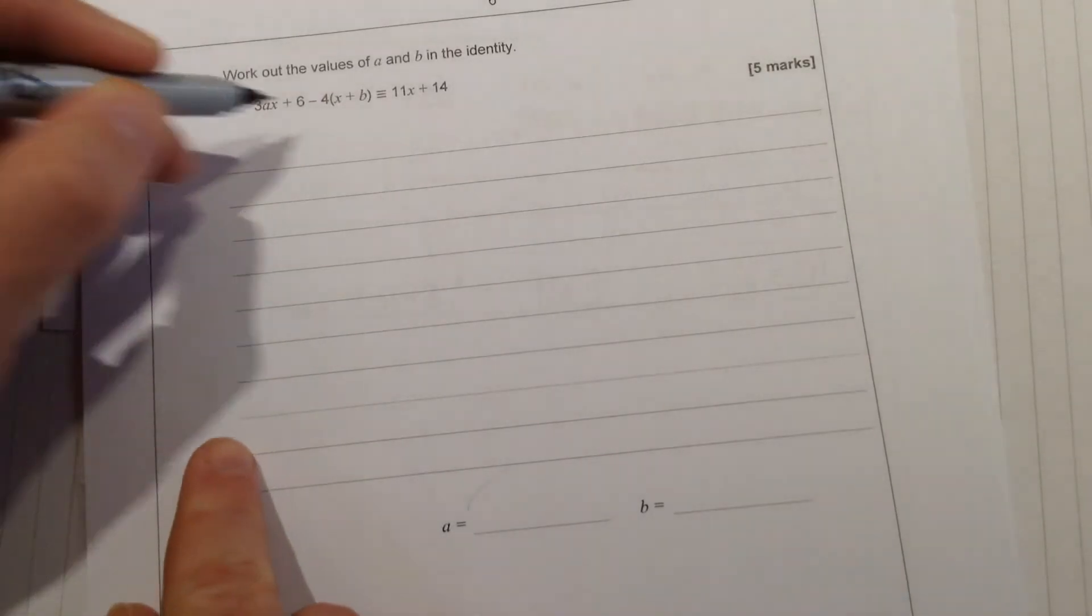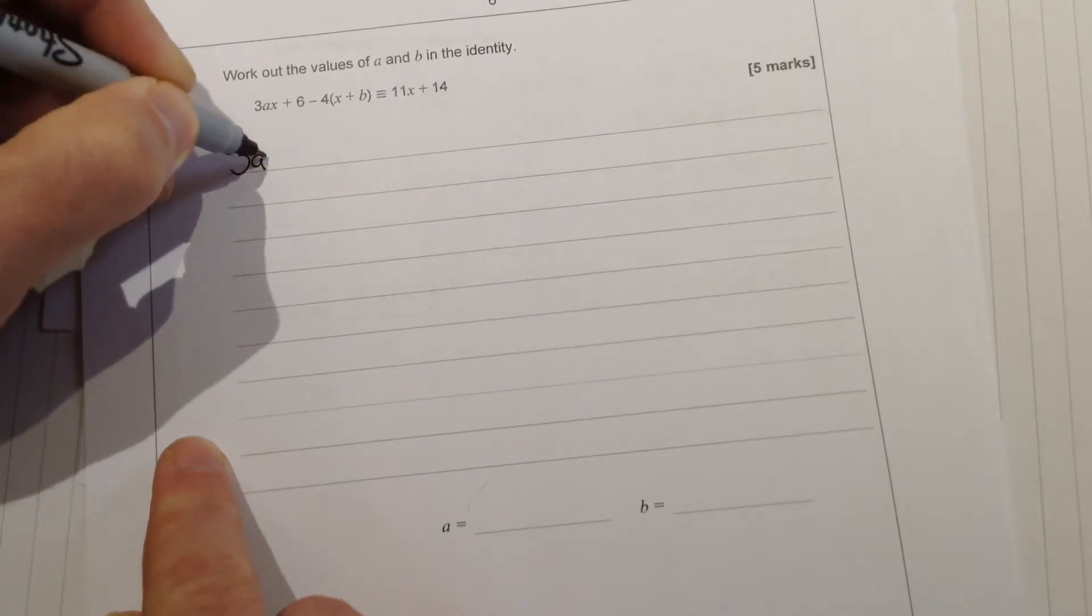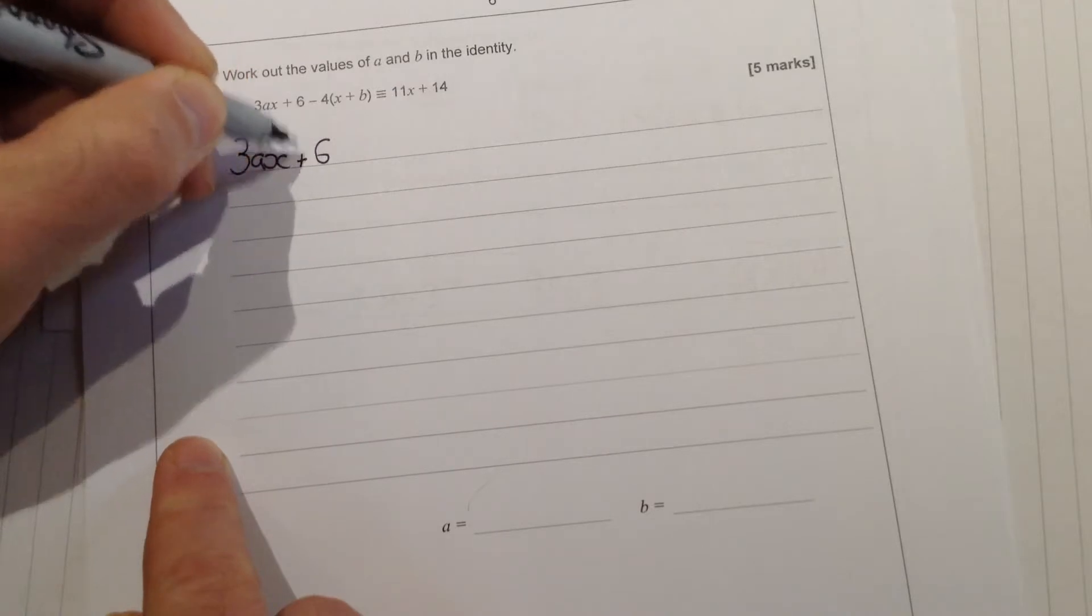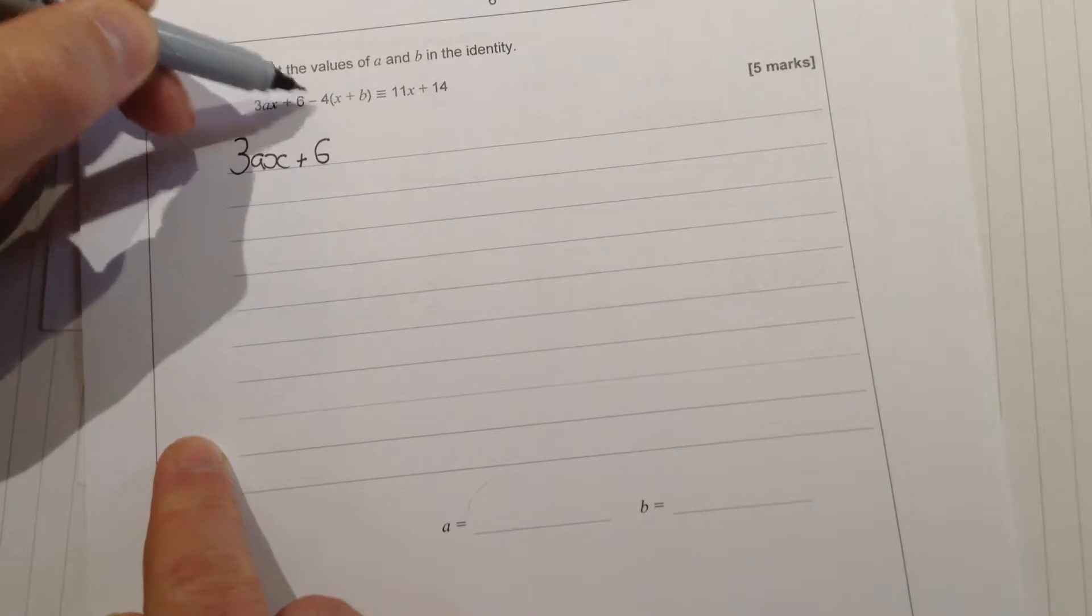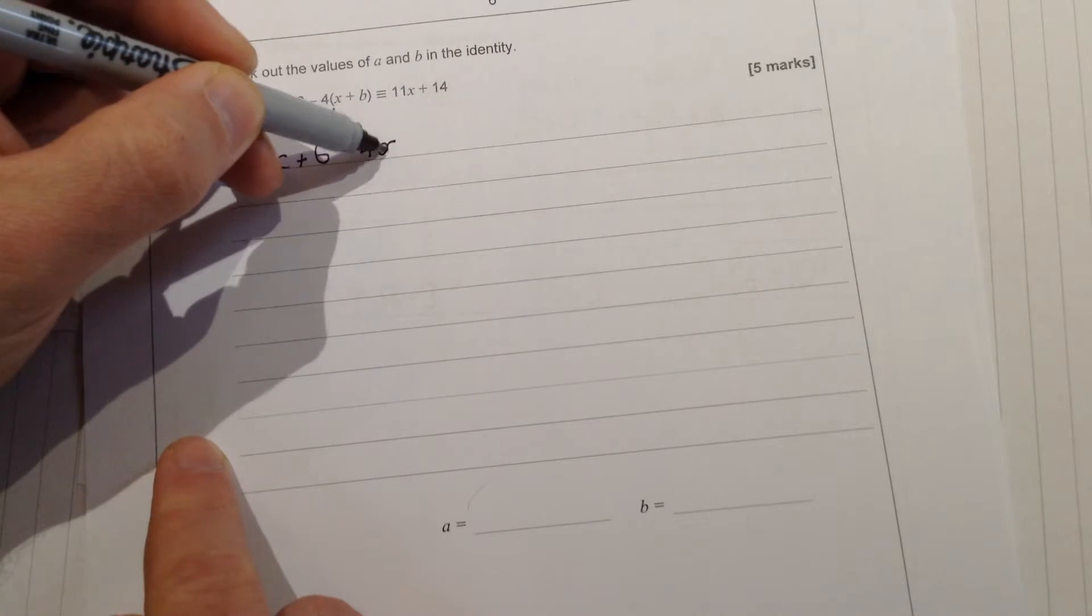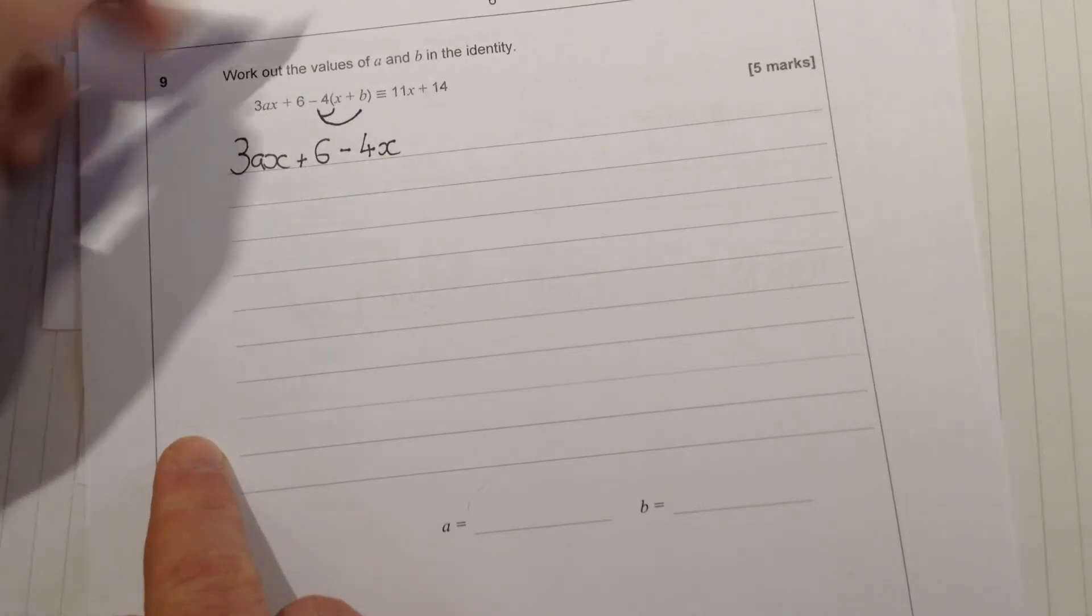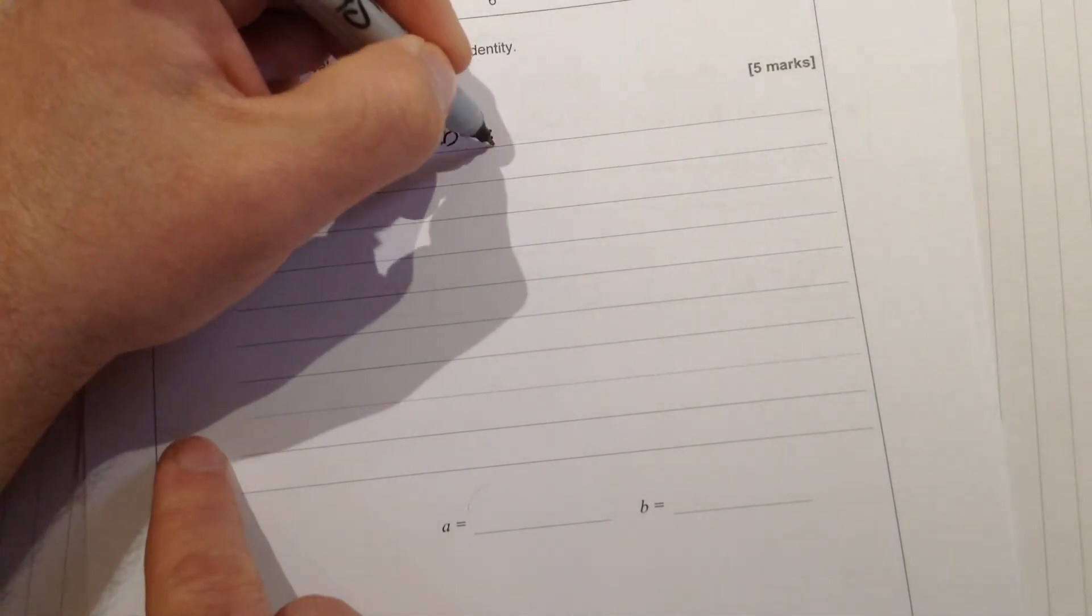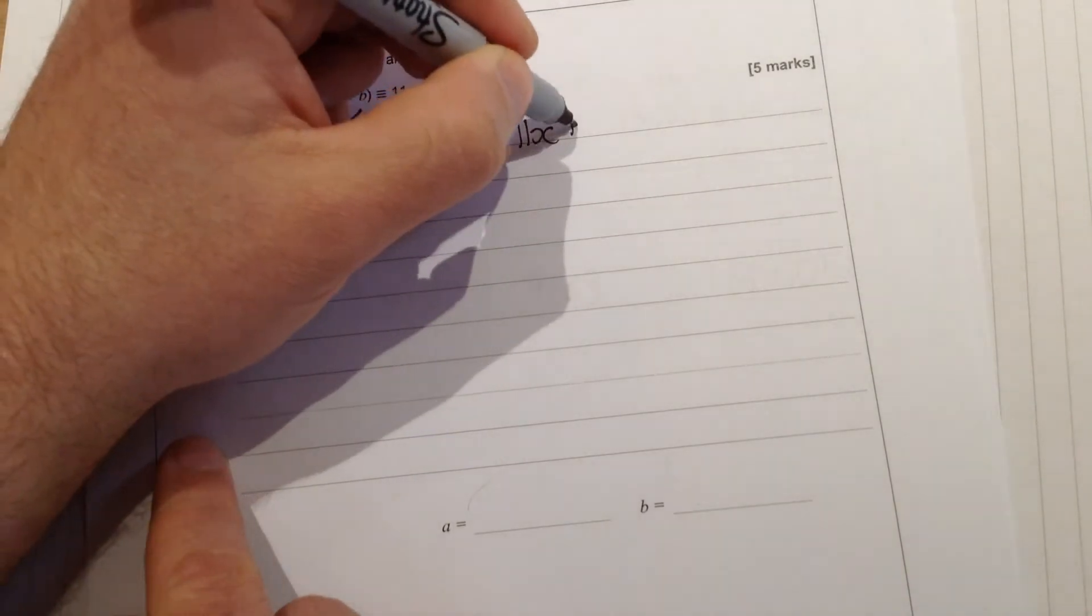So all I would do at this point, because I can see a bracket, is I'd start to expand it. So you give me 3ax plus 6. Expanding this bracket, be careful, remember this here is minus 4, so minus 4 times x is minus 4x, and I'm doing minus 4 times b, so minus 4b. Now we need that to always be equal to 11x plus 14.